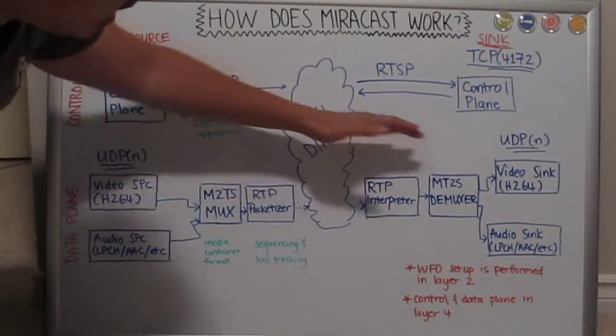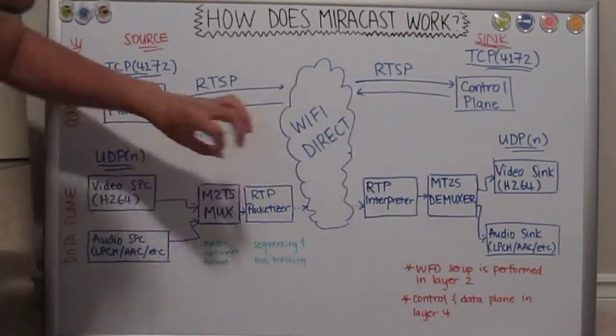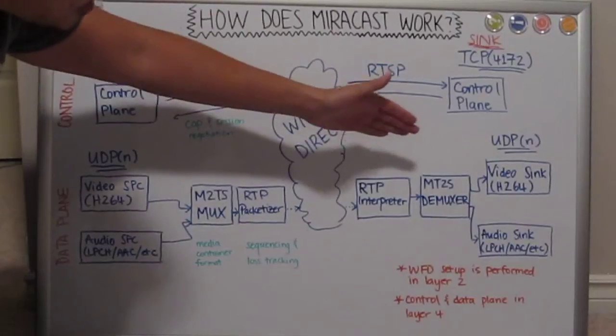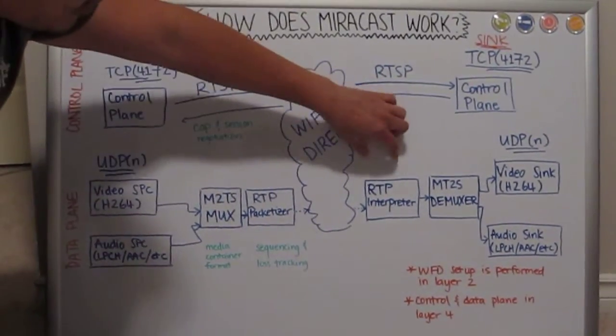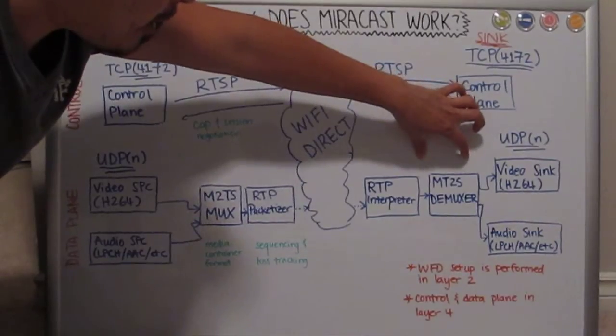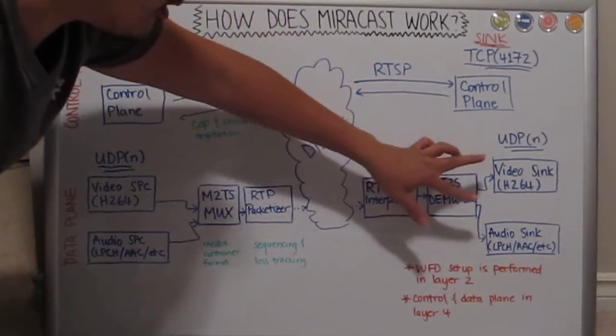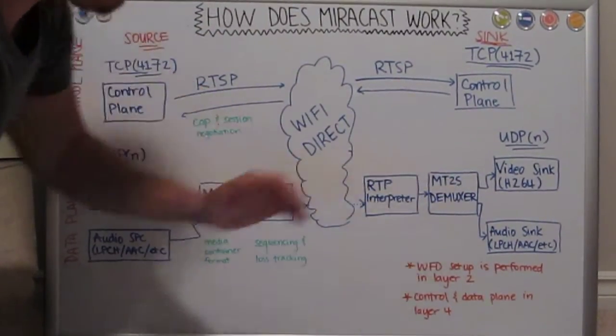And obviously on the other end, when it's being received by the sink or the receiver, the reverse process occurs. So we first chain the packets and interpret RTP packets, chain them up, and then extract the MPEG-2 transport stream out of it, and then you separate that further into the actual video and the audio stream for playback purposes.